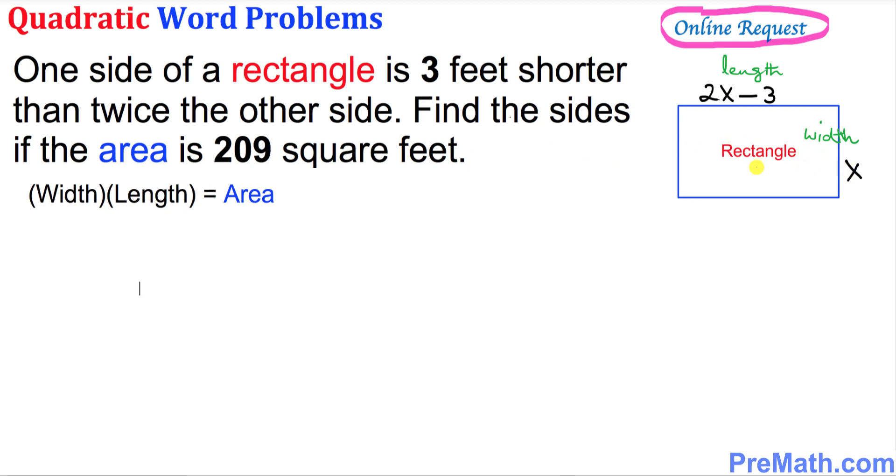In our case, width is x times the length is 2x minus 3, and the area in this word problem is given to be 209 square feet.